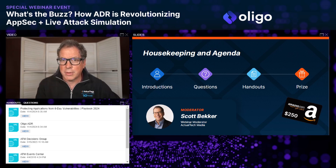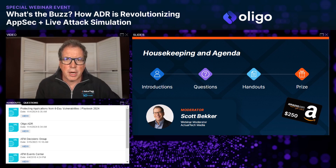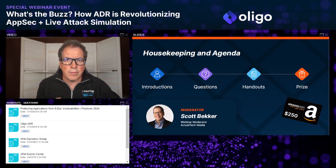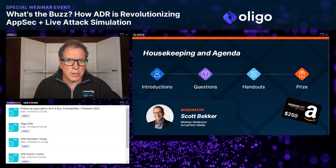Before we get to today's great content, we have a few housekeeping items. We want this to be an informative event, so we encourage any questions in your webinar control panel in the questions box. If you're having any technical difficulties, a browser refresh will fix most of them. In the handout section, you'll find several resources — especially two from Illigo: the 2024 playbook on protecting applications from zero-day vulnerabilities, and one on Illigo ADR.